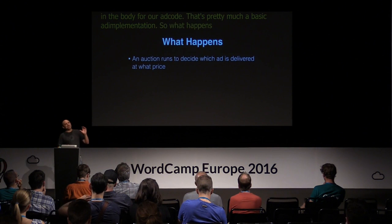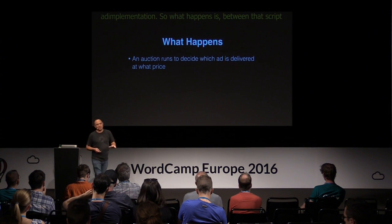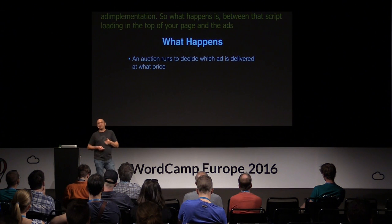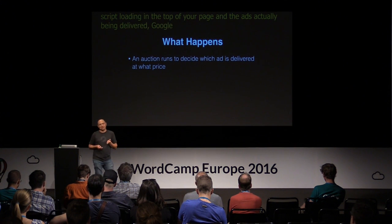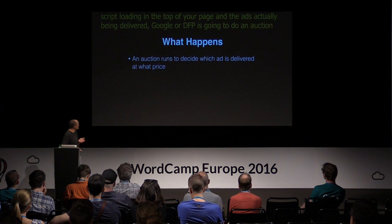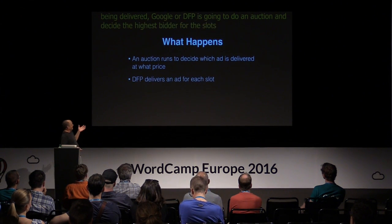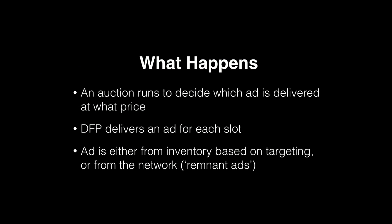Between that script loading and the ads actually being delivered, Google or DFP is going to run an auction and decide who the highest bidder is for the slots on your page. You'll often notice your site is slower when running these ads, in part because this auction has to happen. The ads that get delivered can be ads you've sold directly to your advertisers, or they can be ads coming from the network — so-called remnant ads. If you have traffic, you might just be serving ads off the network, or you might have some you've sold directly.